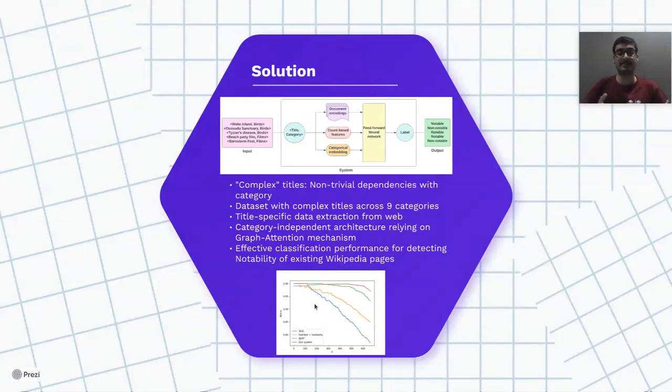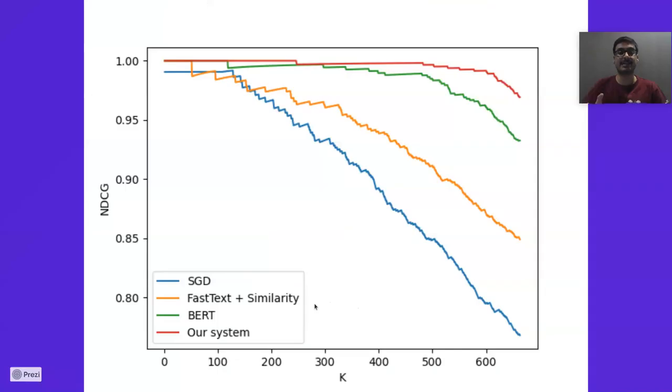For one of our analyses, we have utilized our system as a retrieval system for identifying notable samples and used the normalized discounted cumulative gain to understand our system's performance. It has outperformed all of our defined baselines.